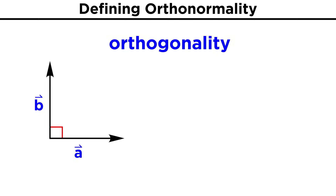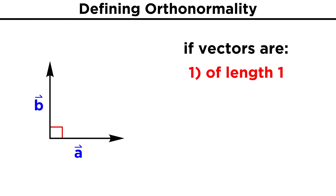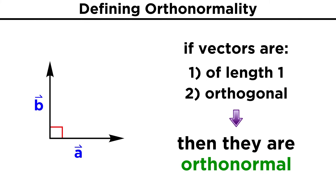Now let's expand on this basic concept. In addition to vectors being orthogonal, we can use another restriction on some vectors to create another useful concept: orthonormality. The 'normal' part here refers to the vectors having a length of one. If a set of vectors are all of length one and also orthogonal, they are said to be orthonormal.